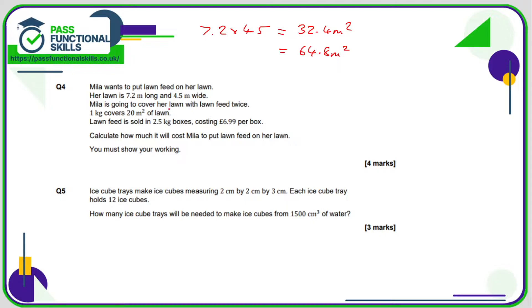Instead of covering a 32.4 meter square lawn with lawn feed twice, she's covering a 64.8 meter square lawn with lawn seed once. A kilo covers 20 meter squared of lawn, so how many 20 meter squared are going into 64? Well, one kilo is 20 meter squared, two kilos is 40 meter squared, three kilos is 60 meter squared. Now, three kilos is not enough because 64.8 is greater, so therefore Myla needs four kilos and she's going to have a lot of grass seed left over.